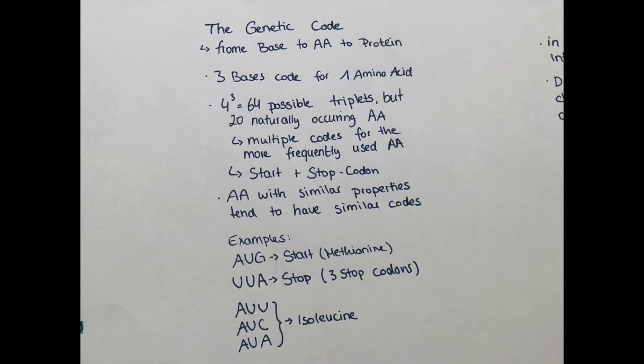The start codon is AUG—so adenine, uracil, guanine. Uracil is the kind of cousin of thymine which is used in RNA. And when AUG as a triplet appears, then the cell knows that they have to start copying here. And there are three different stop codons which signalize the cell that here is the end line of copying.